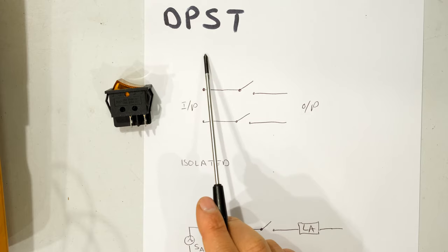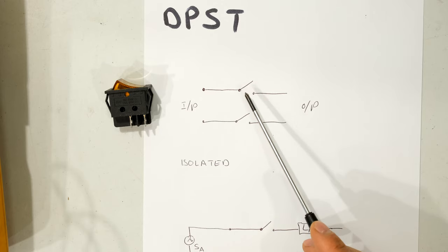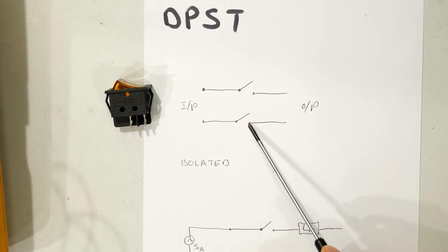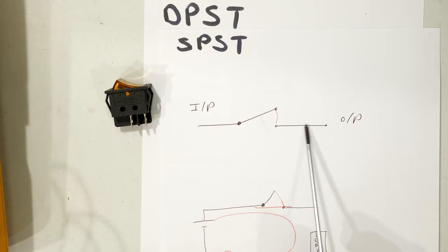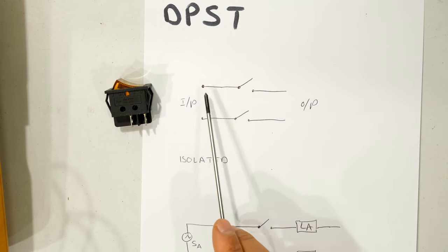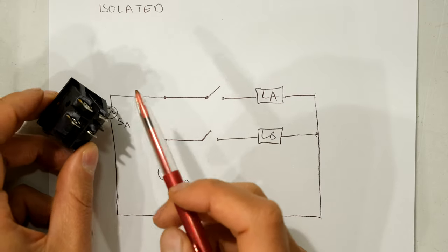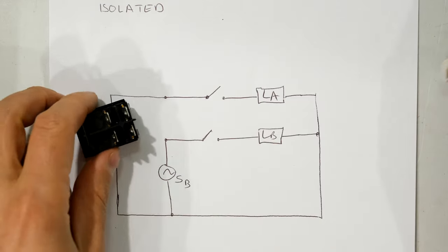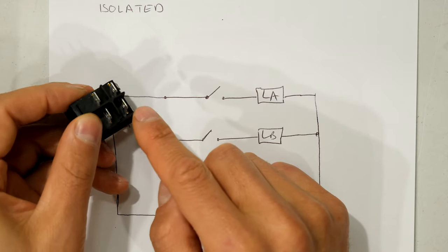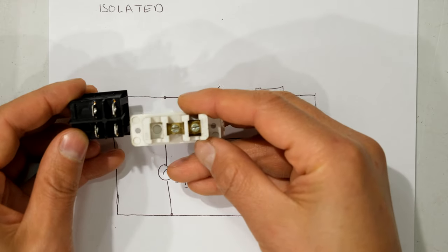The next one is called the double pole single throw. We can see we've got one pole and another pole over here, independent from the first — so we've got two poles. Each pole has only one link to throw closed, so we have a single throw on each. Even though it has a double pole, they are isolated from each other. This is like the single pole single throw but duplicated — one single pole single throw and another single pole single throw in the same package. Here's an example: there's one switch and there's another. It's like having two single pole single throws in the same package.